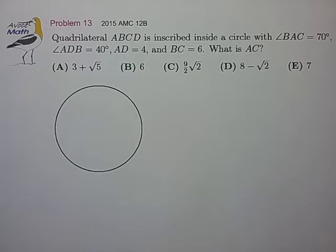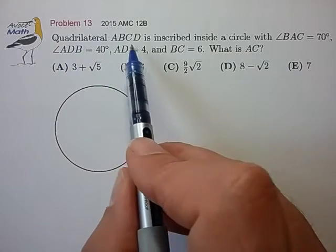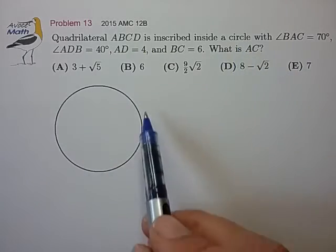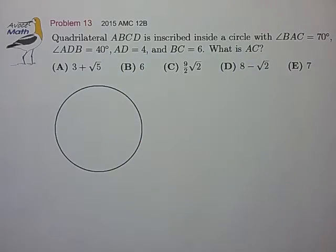This is a question where a careful drawing will probably help us, so let's try to do that. When trying to draw a quadrilateral inscribed inside of a circle, I find it's generally better to start with a good circle and try to stuff the quadrilateral inside of it instead of the other way around.